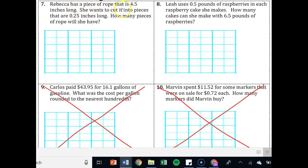Alright, problem number 7 says, Rebecca has a piece of rope that is 4.5 inches long. She wants to cut it into pieces. This thing about cutting it into pieces, that should always be an alert that's division. That is 0.25 inches long. How many pieces of rope will she get? That's your question. So your answer should be the amount of pieces of rope she gets. So we've got the 4.5 divided by 0.25. So we're going to have to swoop on those numbers.